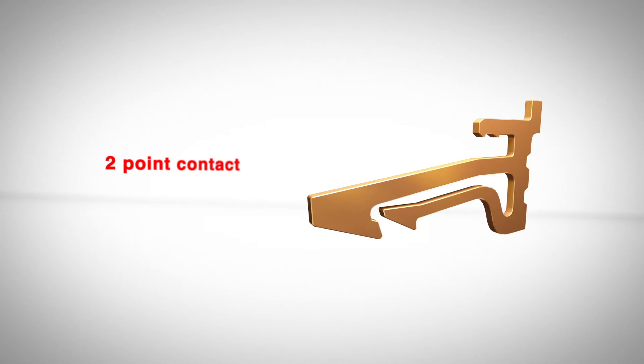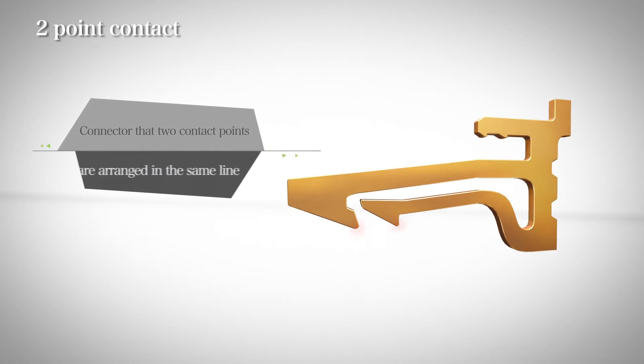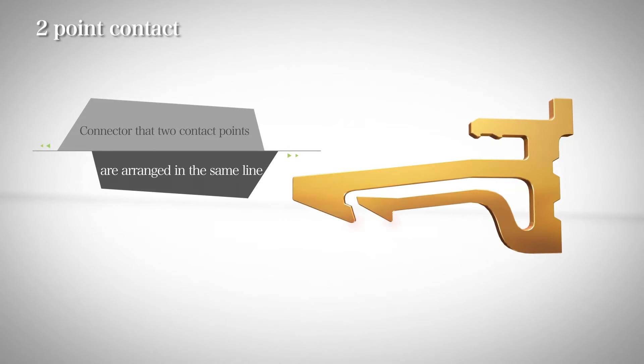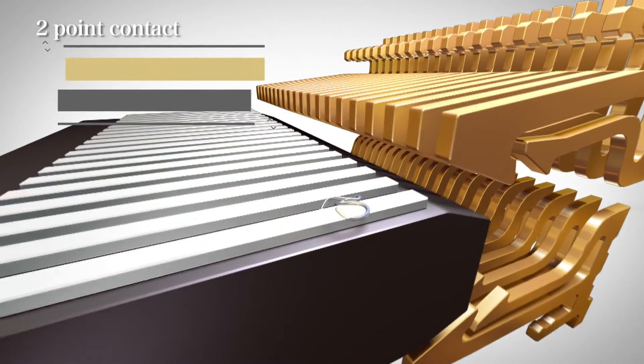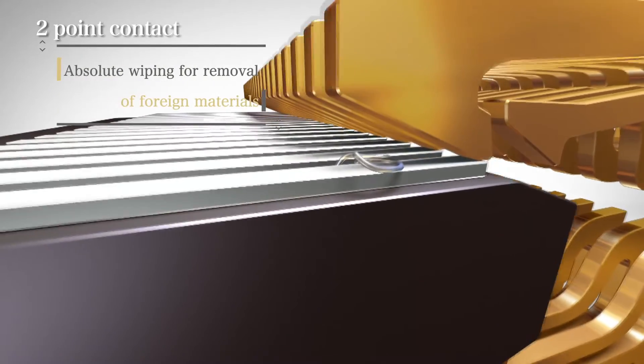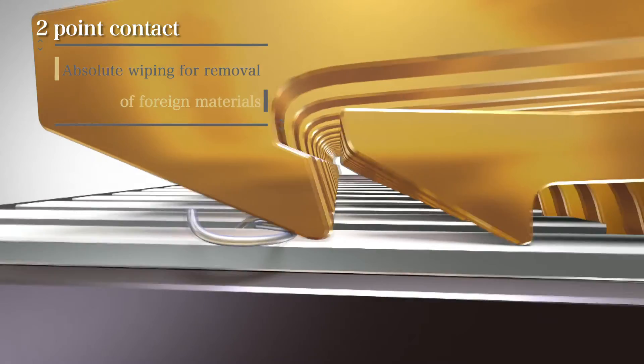The two-point contact connector has two contact points arranged along the same line. Two-point contact wipes and removes foreign materials such as floating particles and flux, and ensures complete connection with the opponent contact.